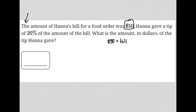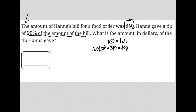20% of what? 20% of the amount of the bill. So her tip had to have been 0.20 times 50 — that's just translating '20% of the amount of the bill.' That's the translation. So 20% times 50 is equal to $10. She gave a $10 tip.